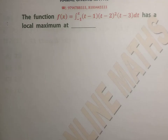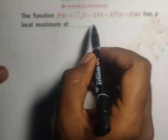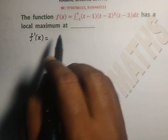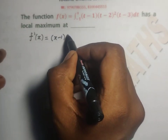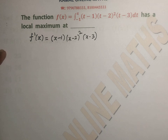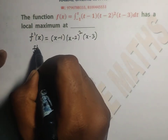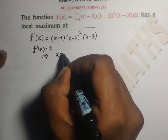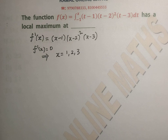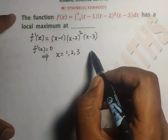Next question: The function f(x) = integral from -1 to x of (t-1)(t-2)²(t-3) dt has a local maximum at which point? Differentiating using the fundamental theorem of calculus: f'(x) = (x-1)(x-2)²(x-3). For maximum or minimum, f'(x) = 0 gives x = 1, 2, 3. We use the first derivative test.